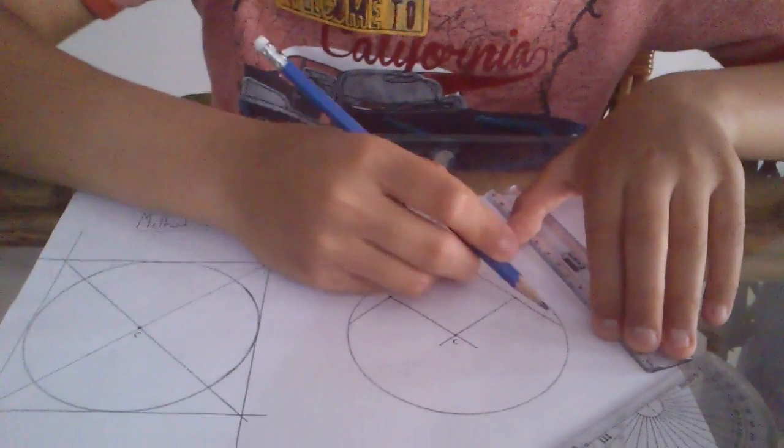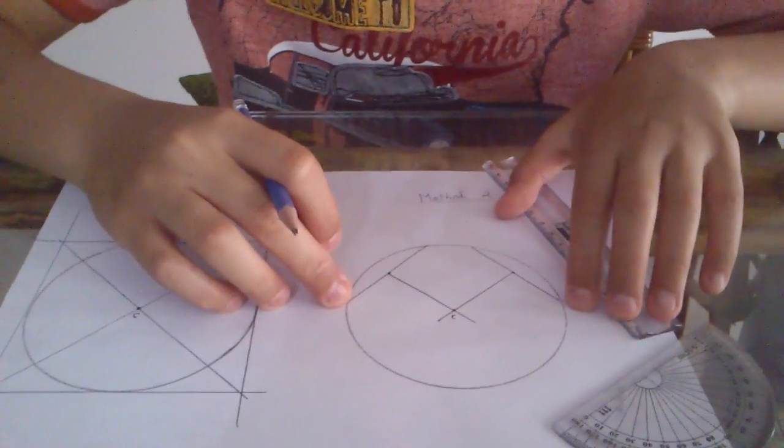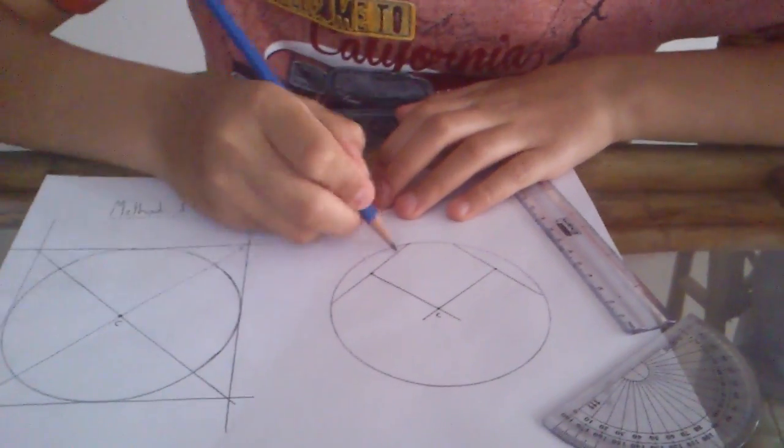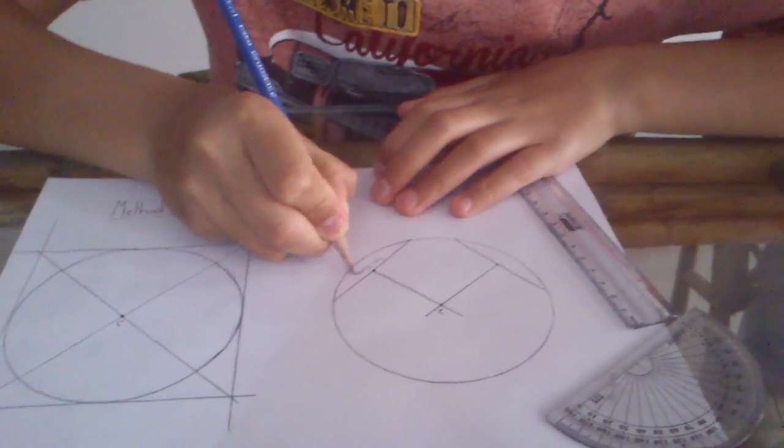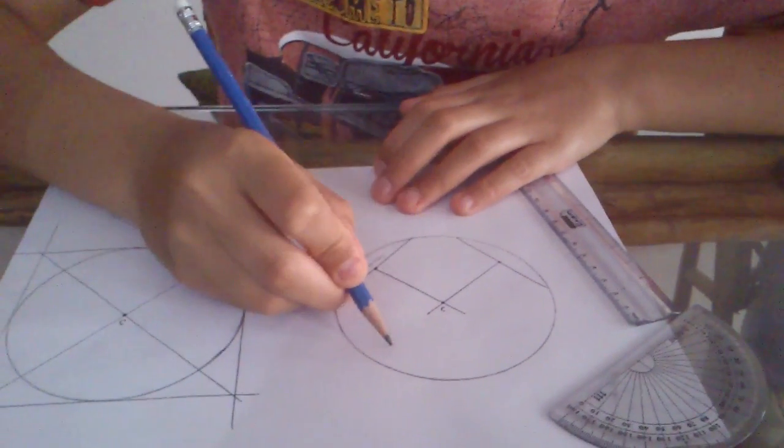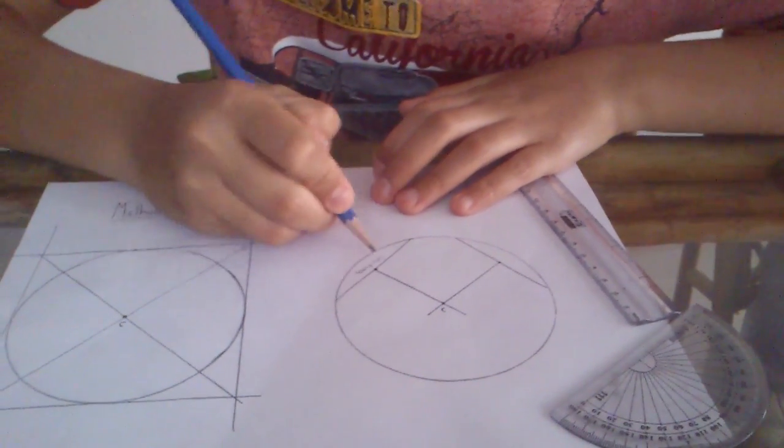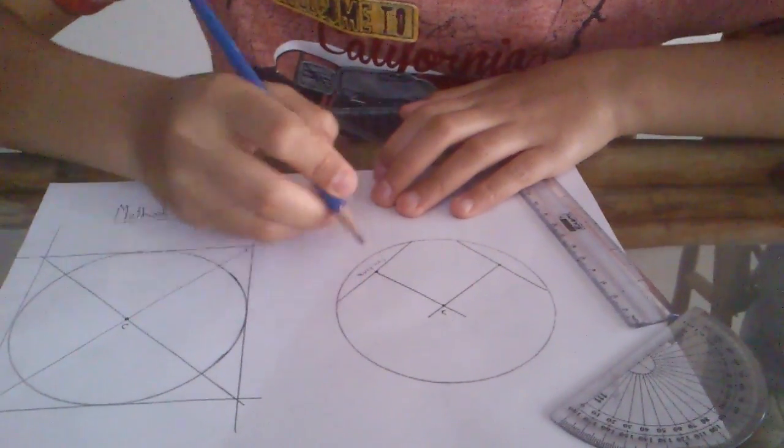Now, for those of you who do not know what a chord is, it is the section of a circle. It is a line that has a section of the circle in it. So it's not a diameter, but it's smaller than a diameter. And it gives you a section of the circle. So that's a chord.